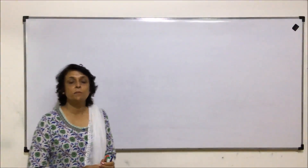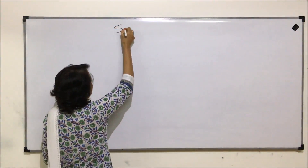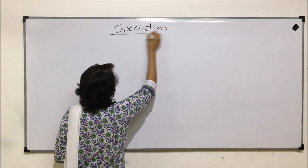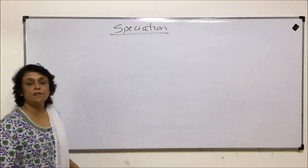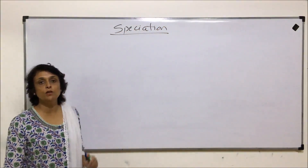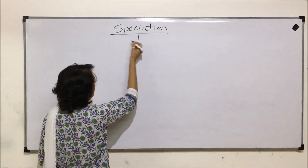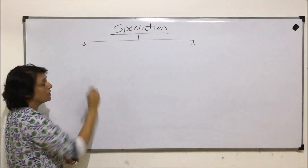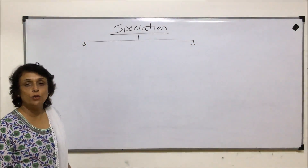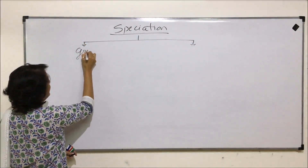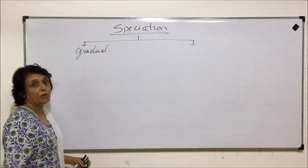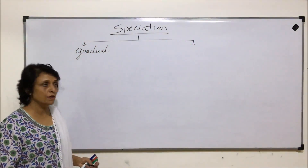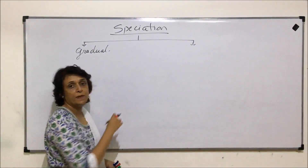We are going to discuss speciation. Speciation is the term given to the process by which new species are formed. Speciation mainly takes place by two methods. One is a gradual process, which is a very slow process that takes thousands of years.